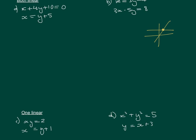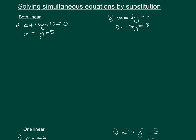But let's go back to the algebra rather than thinking about the graphs. For the first example, we're substituting — using one equation to help with the other. We've got x equals y plus 5, so instead of x in the first equation, we can write y plus 5. That's essentially replacing this x term.